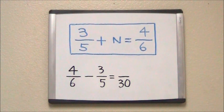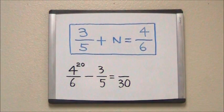Next, we take our numerator of 4, multiply it by our denominator of 5 to get 20. Next, we take our numerator 3, multiply it by our denominator 6 to get 18.